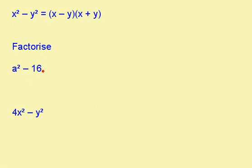So here we have two square numbers. This number is a squared and this number is 4 squared. So we can factorise it, a minus 4, a plus 4.